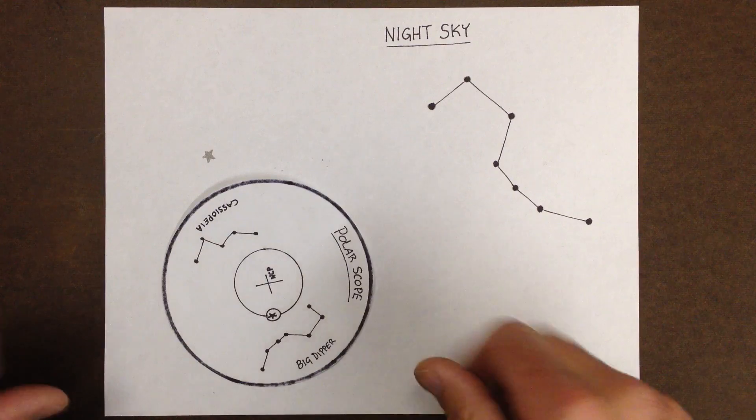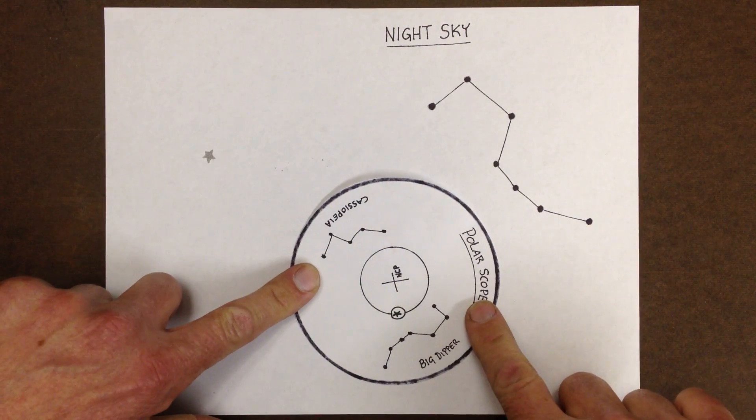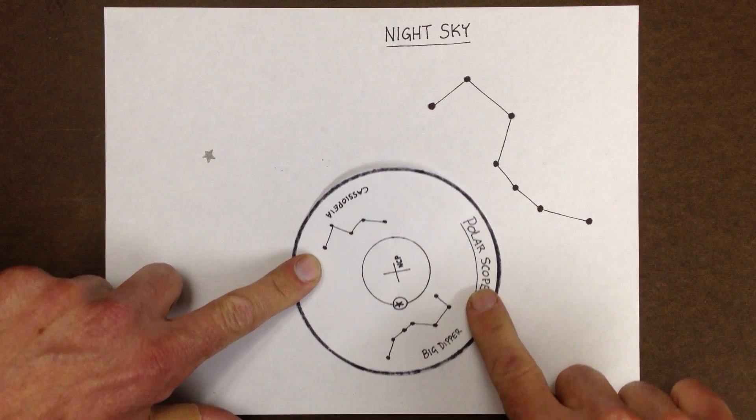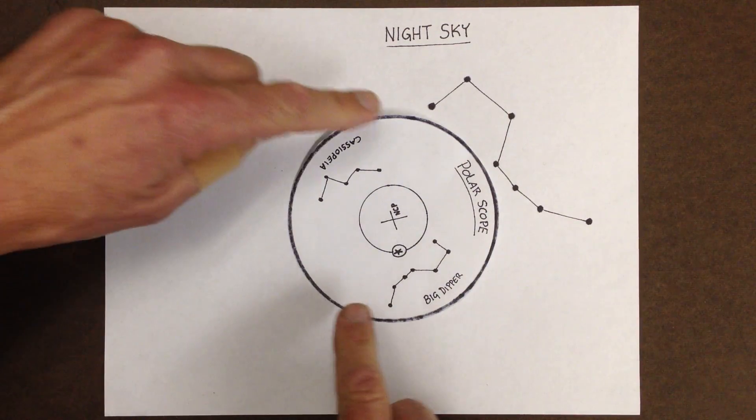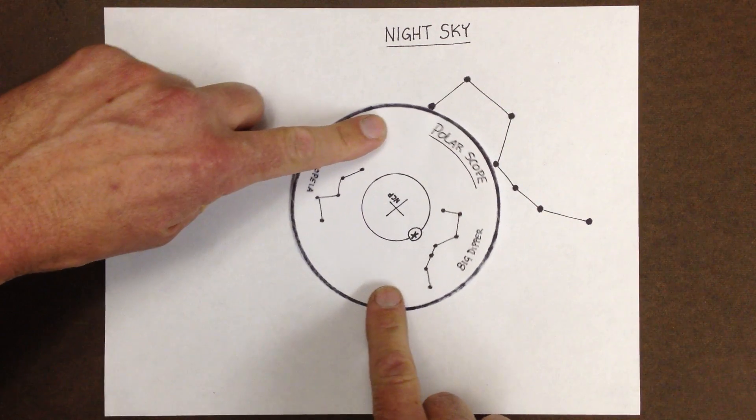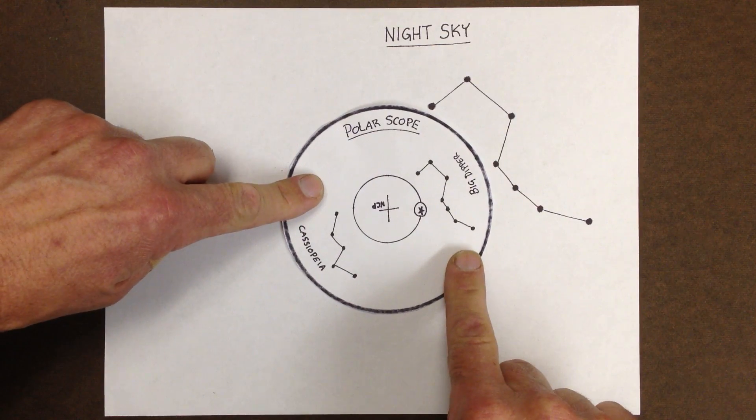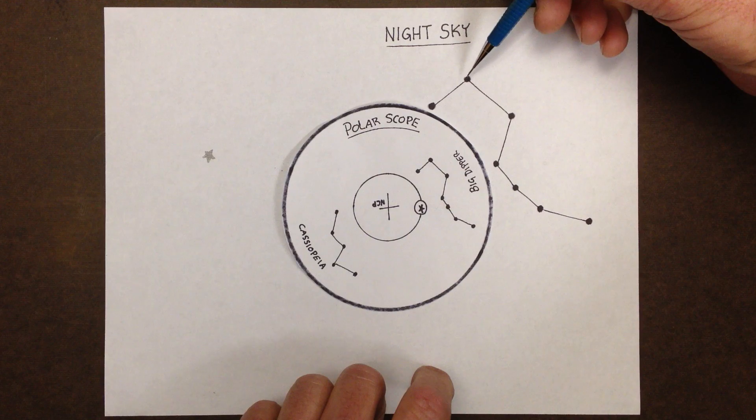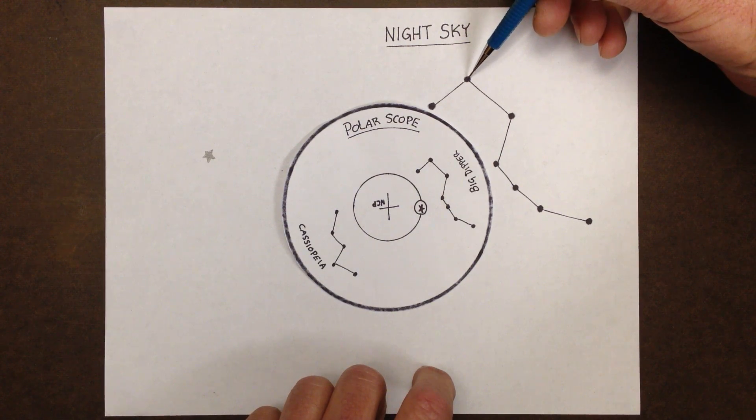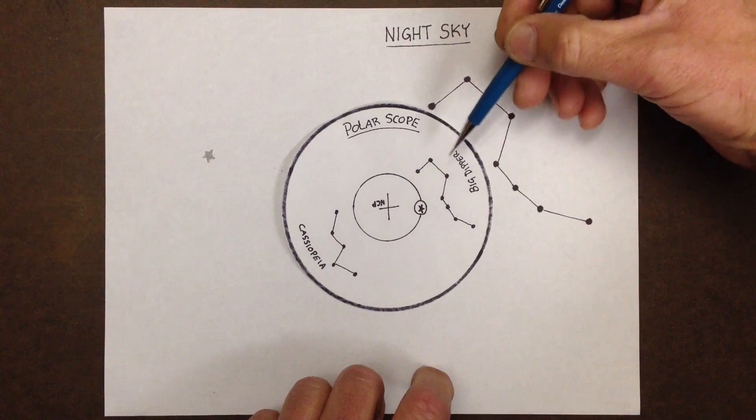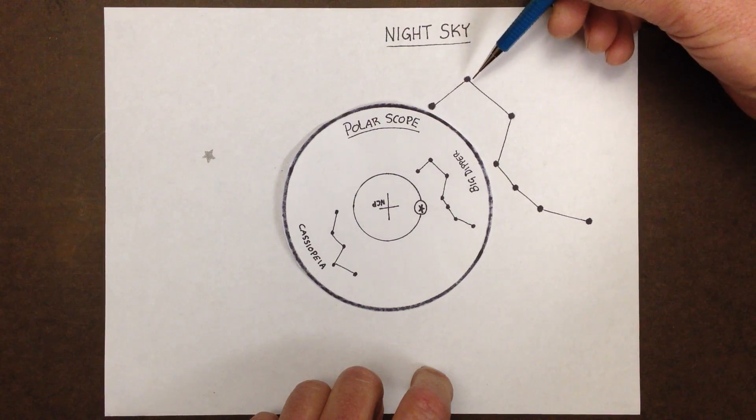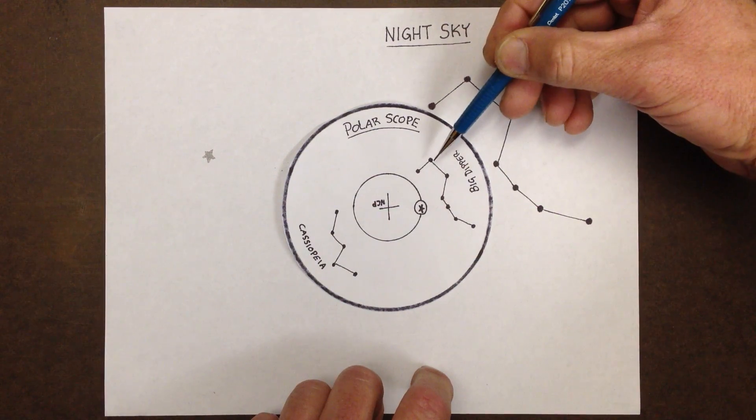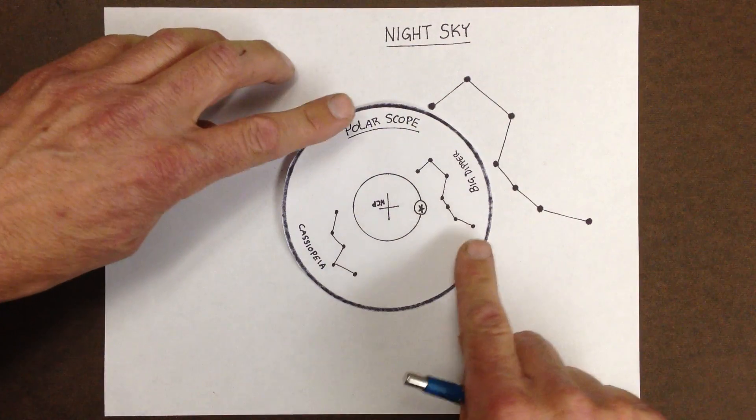You want to move the polar scope, adjust it to the right, come up like this, and then rotate the right ascension like so. What you want to do is have these two stars here be parallel with these two. So imagine the line between the two stars, and you see the line here - you want to make sure that they are parallel.